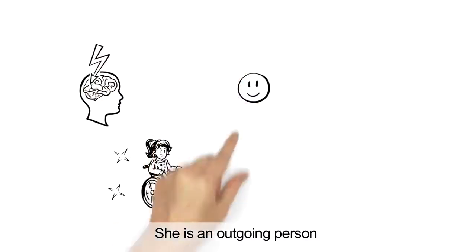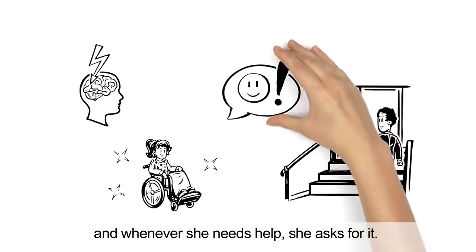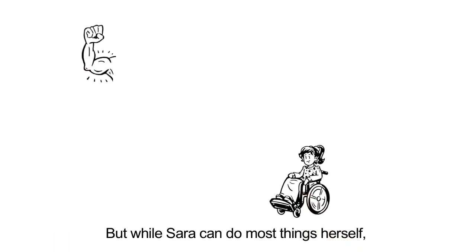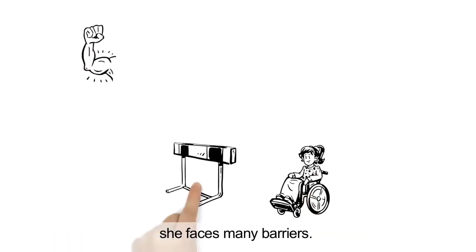She's an outgoing person and whenever she needs help, she asks for it. But while Sara can do most things herself, she faces many barriers.